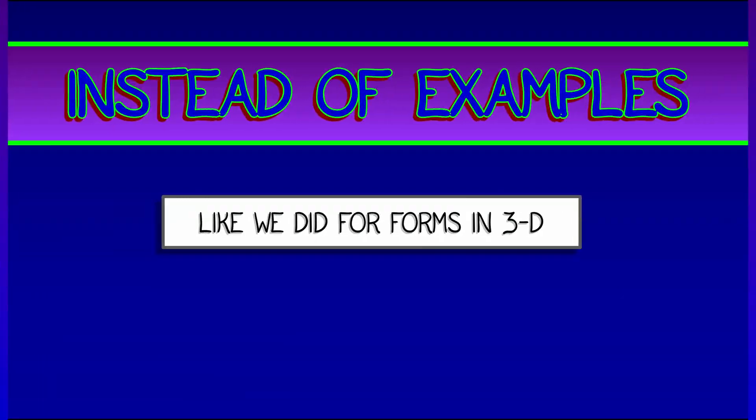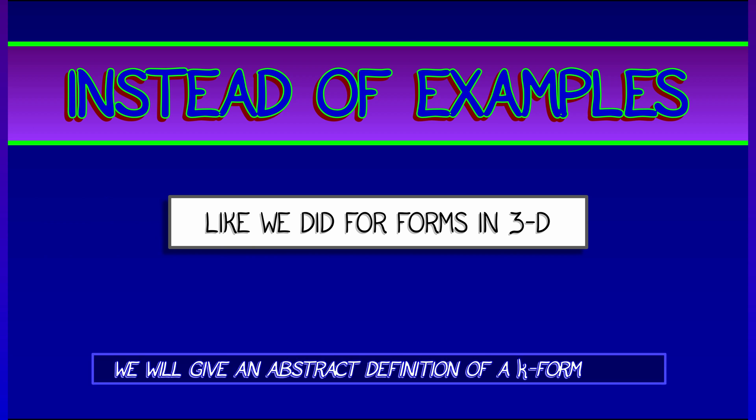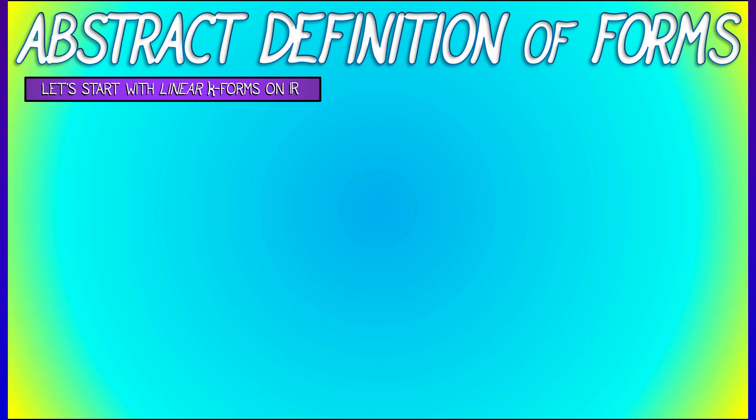So instead of examples like we did for forms in 3D working explicitly with dx wedge dy, stuff like that, let's start off with an abstract definition of what a k-form on R^n is. Now this is going to be a little bit abstract, but it makes sense.